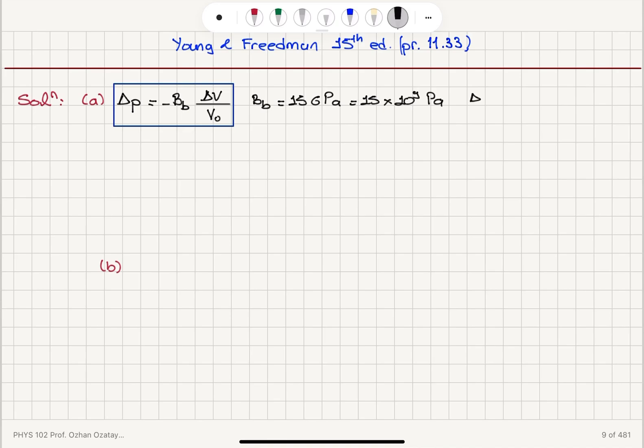And delta V divided by V0, the fractional change in the volume, is minus 0.1%. So it is minus 0.1 divided by 100.